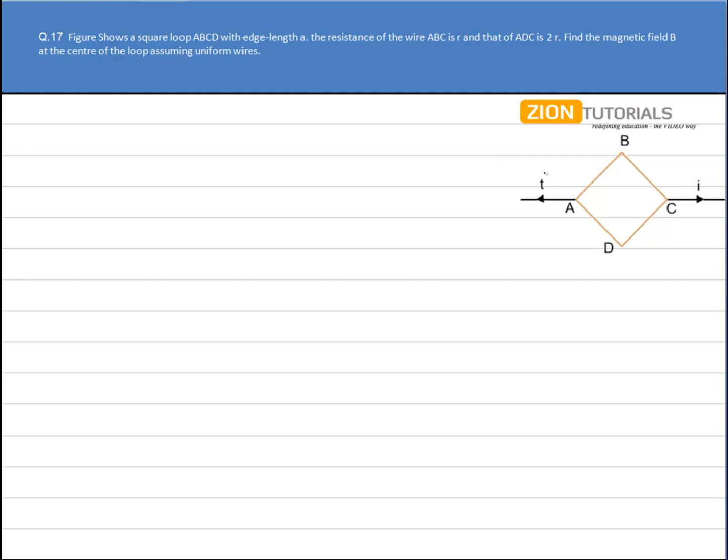Now there is a correction - this is the current I and the direction is this. Now we have to calculate the magnetic field at its center.